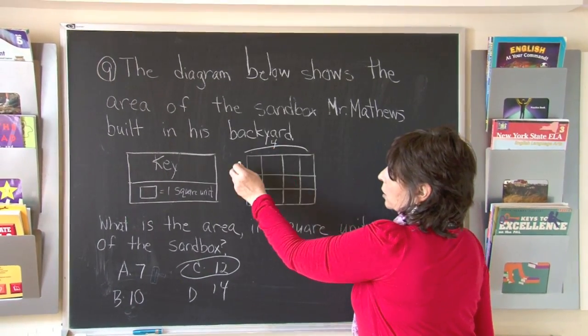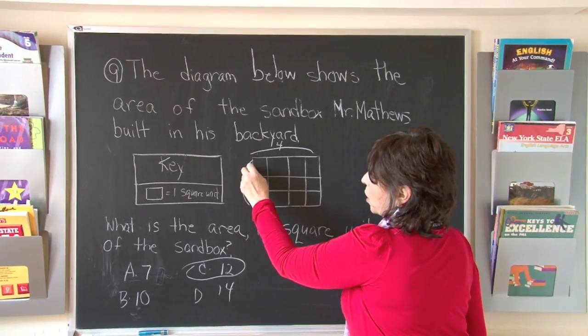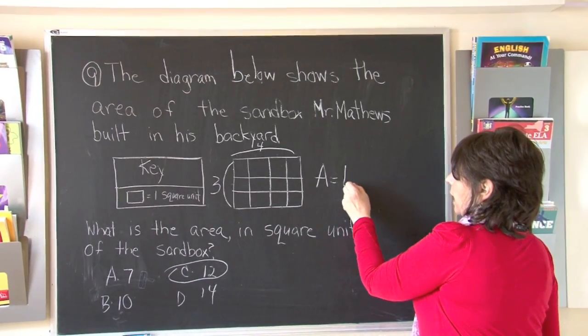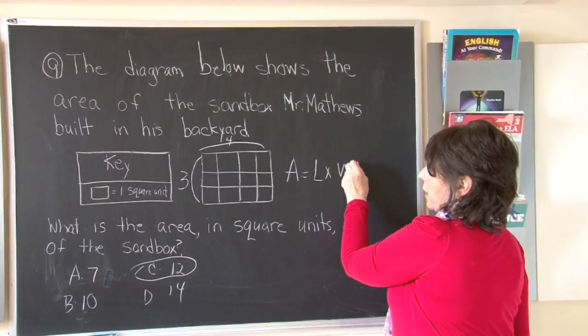And how many are going down the length? 1, 2, 3. And area equals length times width.